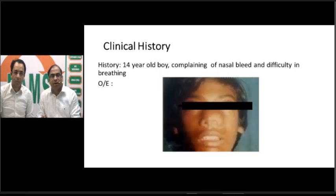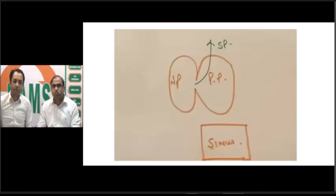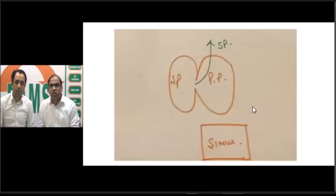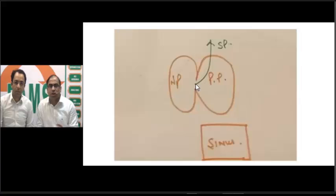On posterior rhinoscopy examination, there will be a reddish mass seen in the choanal area — in the posterior part of the nose, that is the nasopharynx. Once we see this reddish mass, we always go in favor of angiofibroma. Looking at a simple line diagram: on one side is the nasopharynx, on the other side is the pterygopalatine fossa, and both are communicating through the sphenopalatine foramen. The tumor specifically originates from this sphenopalatine foramen.